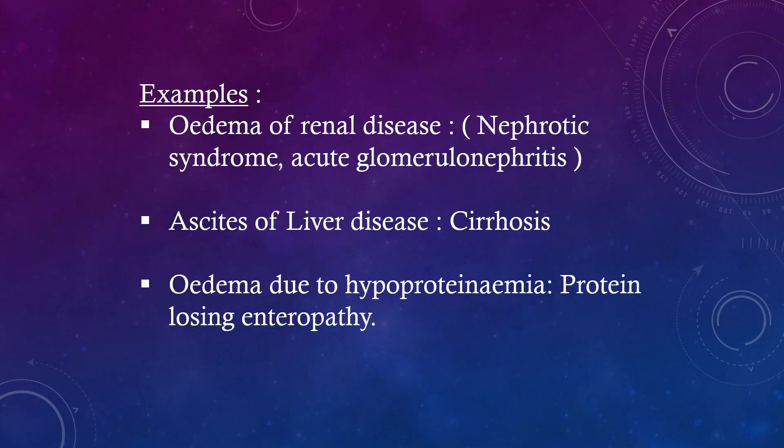Examples. Edema of renal disease: nephrotic syndrome and acute glomerulonephritis. Ascites of liver disease: cirrhosis. Edema due to hypoproteinemia: protein-losing enteropathy.